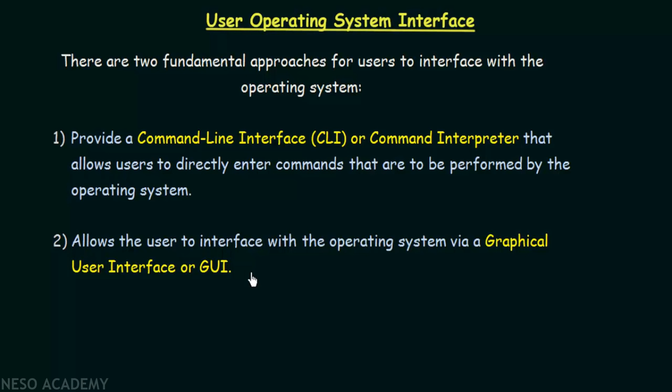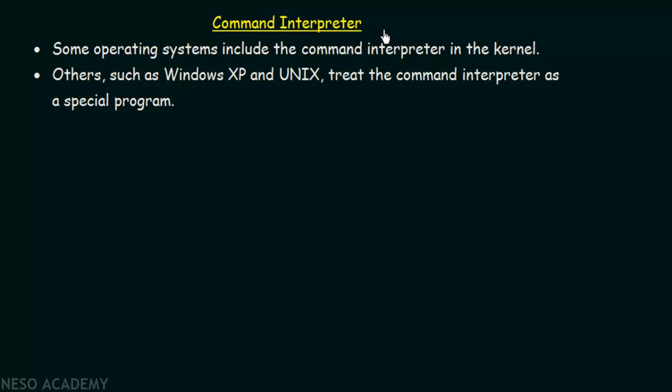Now we will look in more detail at command line interfaces, and take an example of performing a task using the CLI in two different Operating Systems — Linux and Windows. The command line interface is also known as the command interpreter. Some Operating Systems include the command interpreter in the kernel, which is like the heart of the Operating System. Whereas in others, such as Windows XP and UNIX, they treat the command interpreter as a special program.